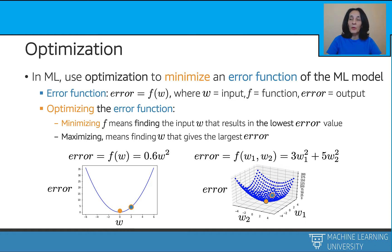When plotting this error function, it can look like either one of the plots shown here — for a machine learning model with one feature or with two features. For some value of W, we get an error value, maybe the blue dots in the plots. For another value of W, we get another error value, maybe the orange dots. The orange dots sit at the global minimum of these error functions — those W's are the parameters of our best machine learning models with the lowest possible errors.